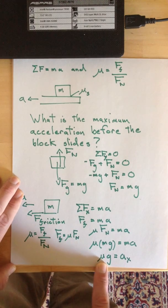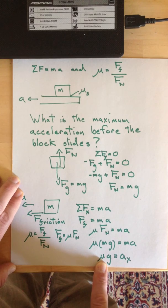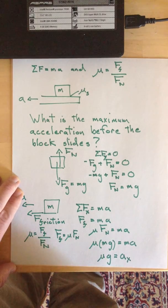So if mu is 0.5, then you can accelerate with half a g of acceleration, 5 meters per second squared. All right. Thank you.